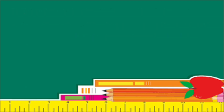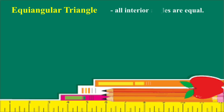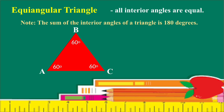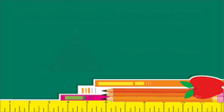A special acute triangle is the Equiangular Triangle, where all angles are equal. If the sum of the interior angles of a triangle is 180 degrees, each angle measures 60 degrees. Please remember that an Equiangular triangle is also Equilateral — if all sides are equal, then all angles are also equal.